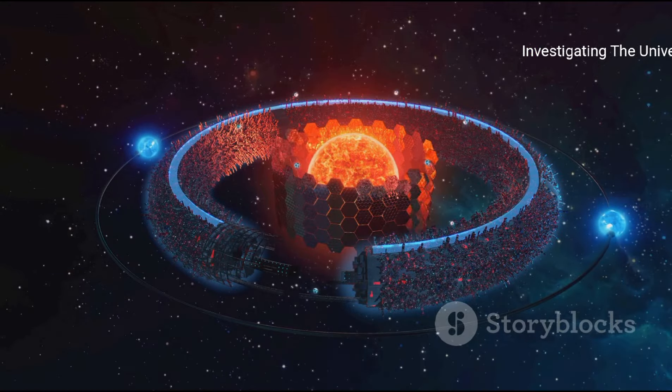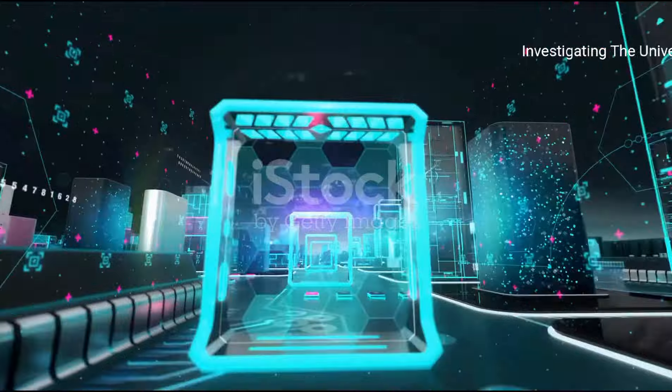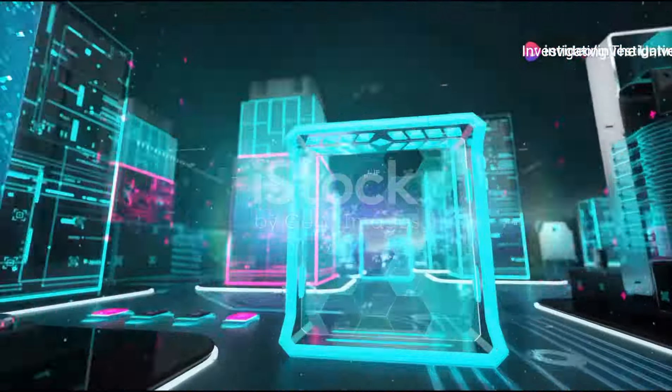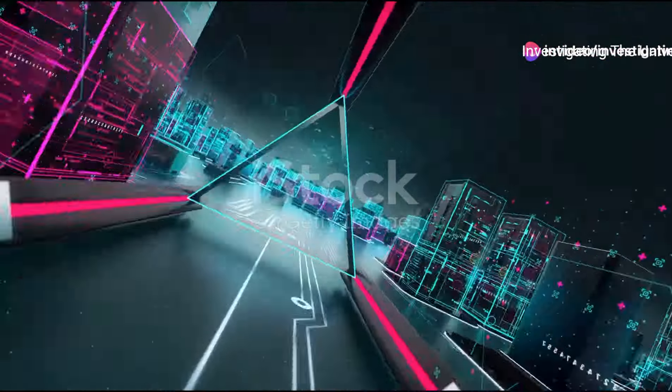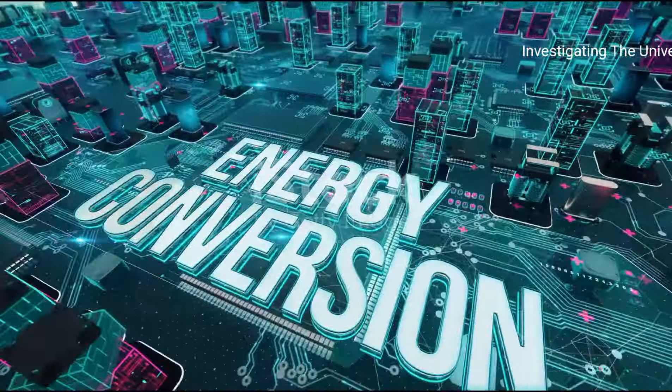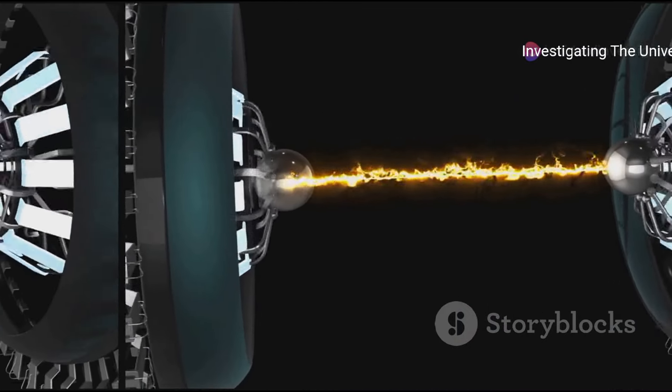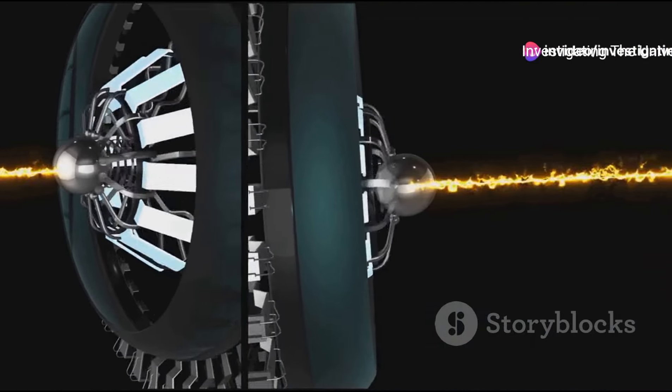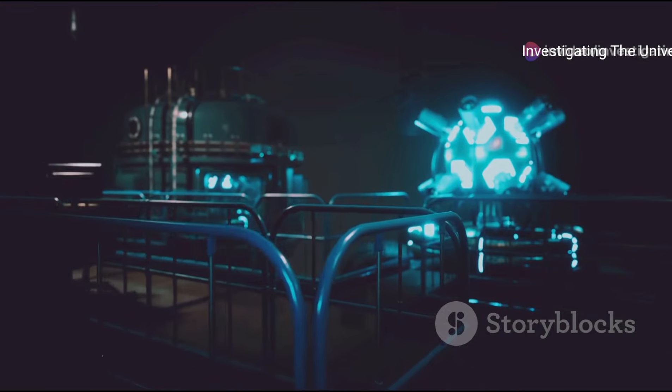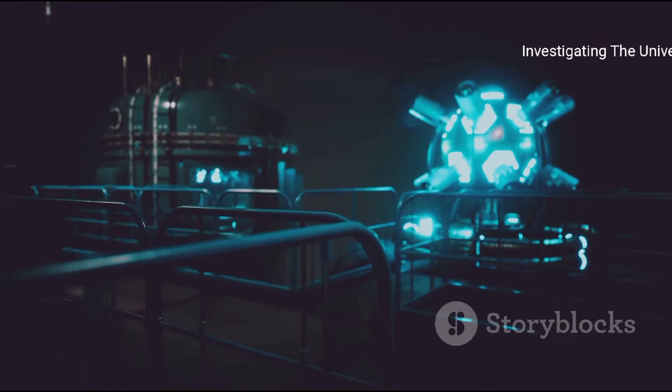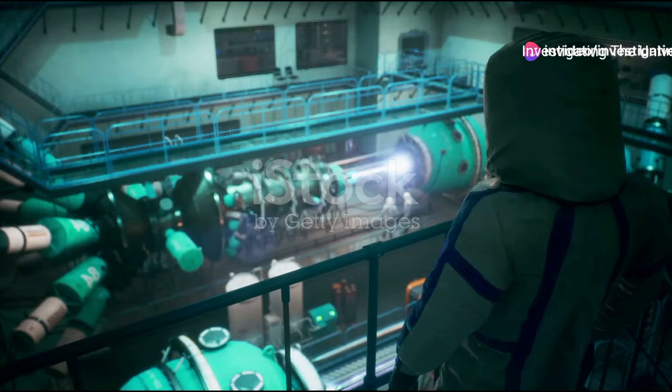Imagine a civilization so advanced that the laws of physics are mere suggestions, tools to be tweaked and refined at will. For a Type VII civilization, the line between energy and matter isn't just blurred, it's practically non-existent. They would possess the astounding ability to convert energy into matter and matter back into energy with flawless efficiency. This isn't science fiction. It's the ultimate mastery of the mass energy conversion processes first hinted at by Einstein's famous equation E=mc².